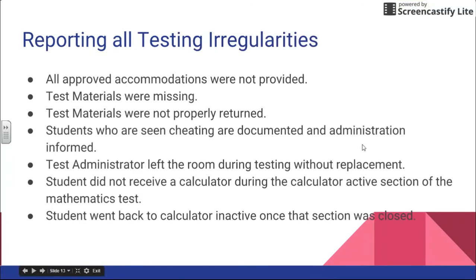Please report any testing irregularities, such as if accommodations were not provided for the entire testing session, if test materials were missing — such as a child didn't get a calculator or their pencil broke — or if test materials were not properly returned, including all scratch paper. Report students who are seen cheating and ensure that it is documented and administration has been informed. The test administrator should not leave the room during testing unless replaced with another administrator. Also report if a student did not receive a calculator during the active section of the math test, or if a student goes back into the calculator inactive section after it has been paper-clipped off.